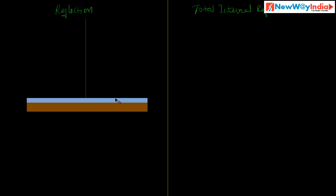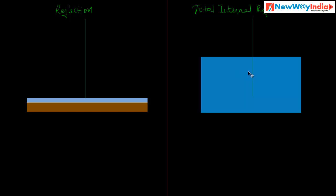Consider a mirror — a mirror is required for reflection. It has a smooth polished surface, and because of this smooth polished surface, reflection can take place. For total internal reflection, it requires a denser medium and a rarer medium — for example, a glass slab — and no smooth polished surface is required.